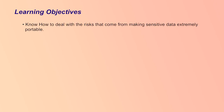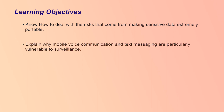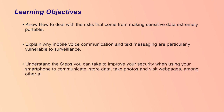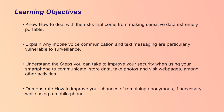Learning objectives. After viewing this lecture, the learner shall be able to know how to deal with the risks that come from making sensitive data extremely portable; explain why mobile voice communication and text messaging are particularly vulnerable to surveillance; know the steps you can take to improve your security when using your smartphone to communicate, store data, take photos and visit web pages among other activities; and demonstrate how to improve your chances of remaining anonymous if necessary while using a mobile phone.